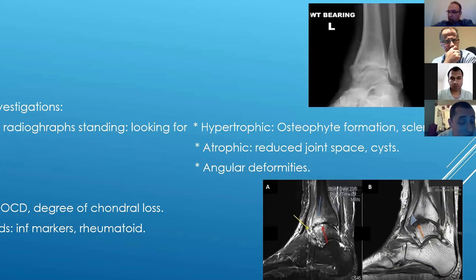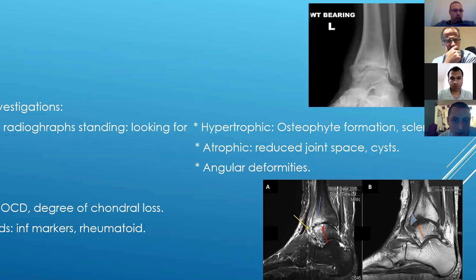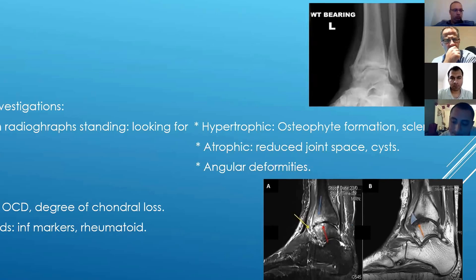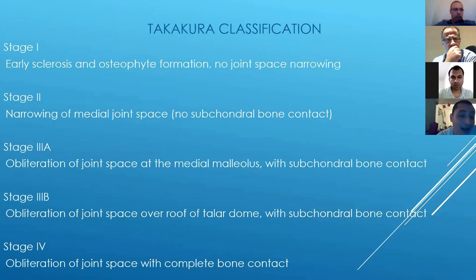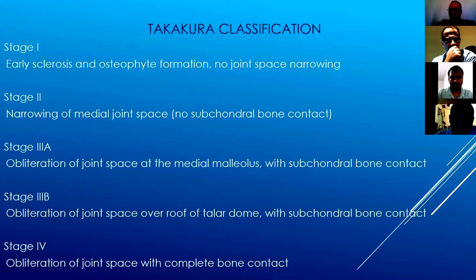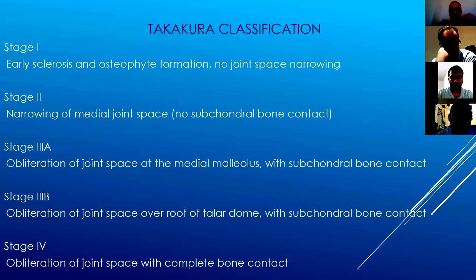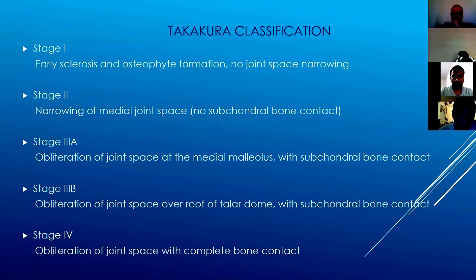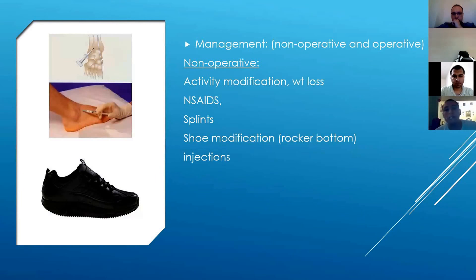Other investigations: if the ankle doesn't look too bad, request an MRI scan to look for osteochondritis dissecans and assess the degree of chondral loss — that may guide you toward arthroscopy rather than major surgery. If you're thinking rheumatoid arthritis, mention bloods and inflammatory markers. There is a classification called the Takakura classification — it's well known and in all the books. It has stages one, two, three A, and three B. I read about it before my exam but did not use it in the exam.